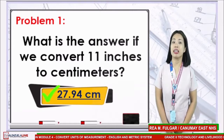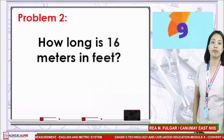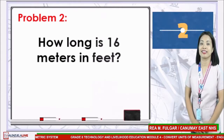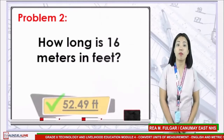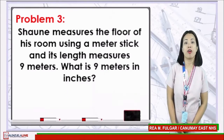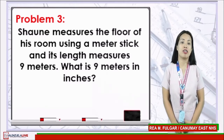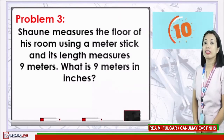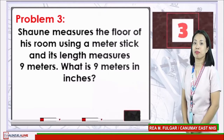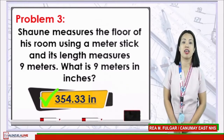Number 2: how long is 16 meters in feet? Your timer starts now. If your answer is 52.49 feet, you are doing great! Let's continue! Sean measures the floor of his room using a meter stick and its length is 9 meters. What is 9 meters in inches? Your timer starts now. If your answer is 354.33 inches, you got it right!